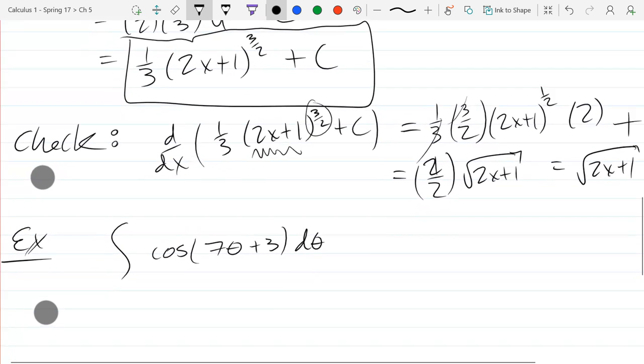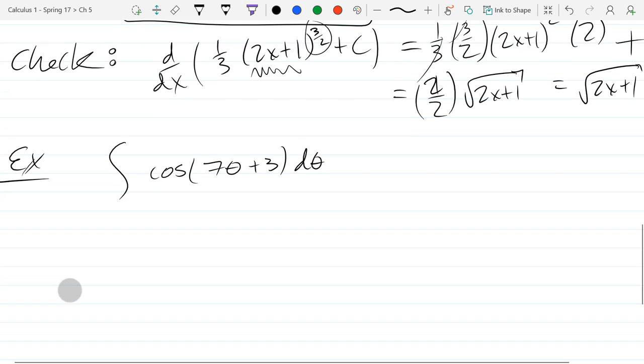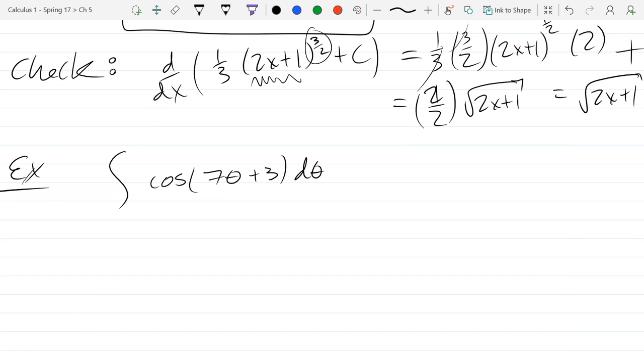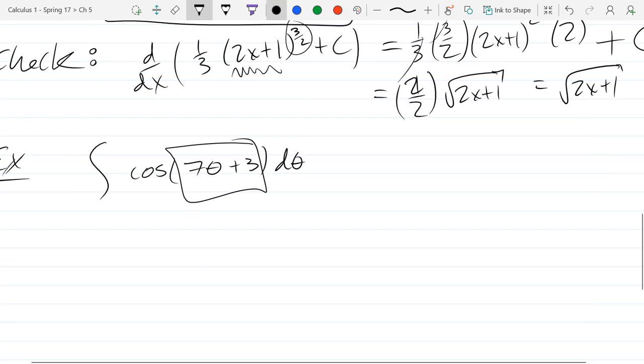So this next example is trig and it's going to use theta, it's not x's. You can use pretty much any variable letter you want - d is a really bad letter to use but any other letter will work. I don't know the anti-derivative of cosine of... if it was just cos theta then the anti-derivative would be sine theta and I'd be done, but the problem is I don't just have theta inside.